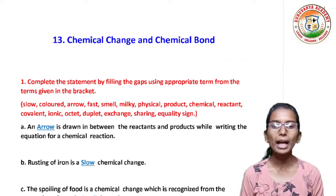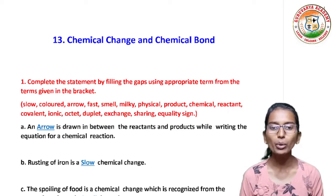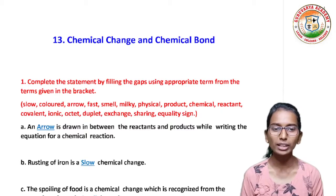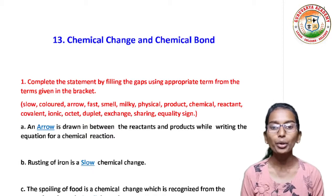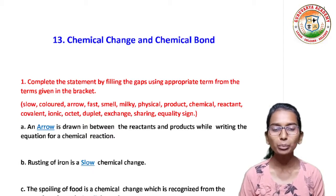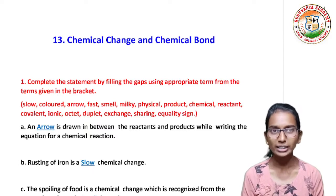In the first bracket, the terms are: Slow, Colored, Arrow, Fast, Smell, Milky, Physical, Product, Chemical, Reactant, Covalent, Ionic, Octet, Duplet, Exchange, Sharing, Equality, Anicide.